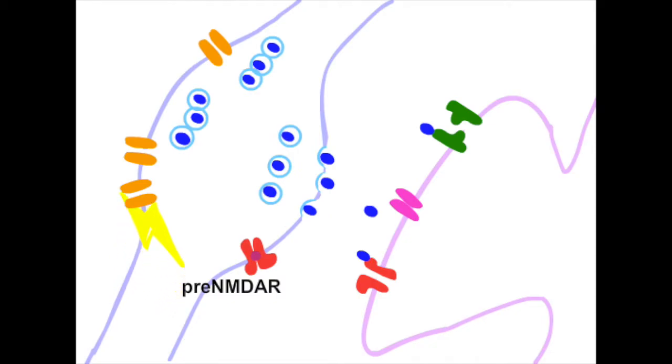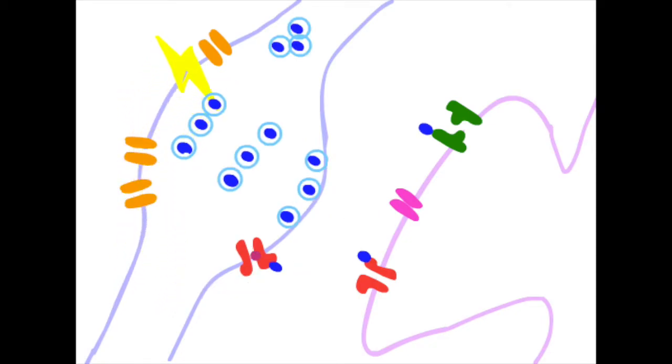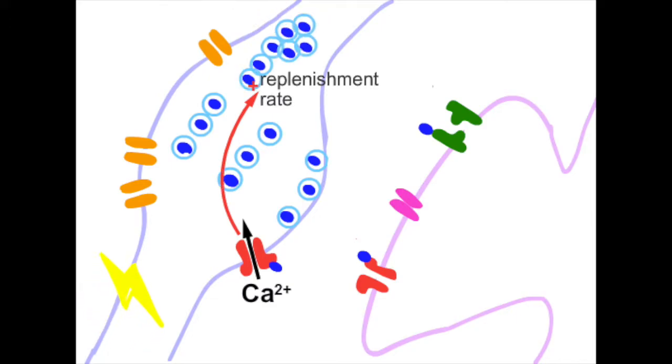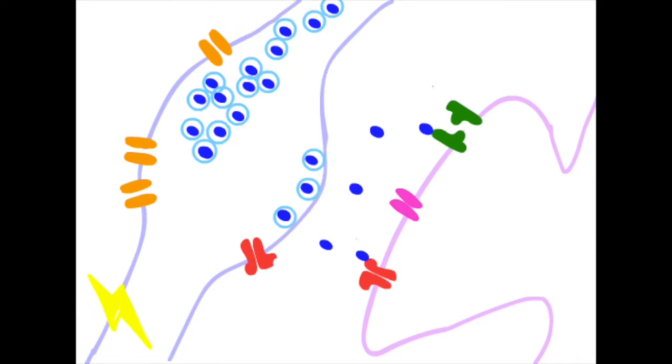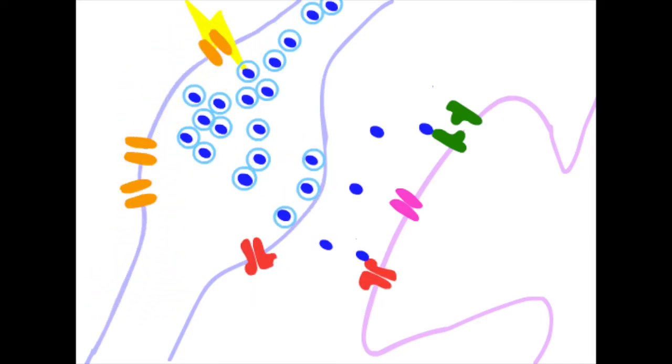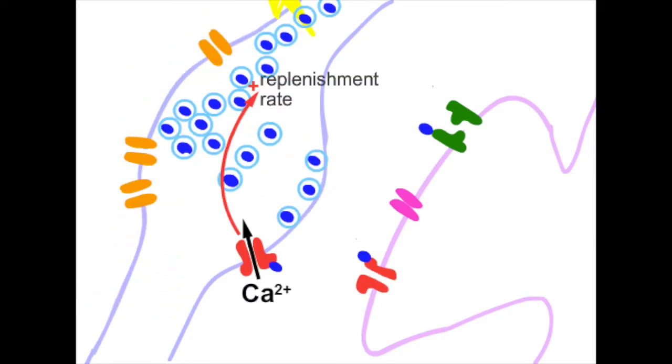We found that for evoked release, presynaptic NMDA receptors upregulate replenishment rates of neurotransmitter-containing vesicles in the presynaptic terminal to indirectly sustain neurotransmission during high frequency activity. It is sensitive to magnesium and requires high frequency activity.